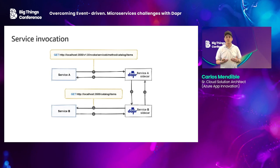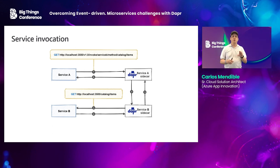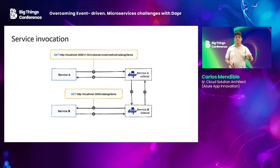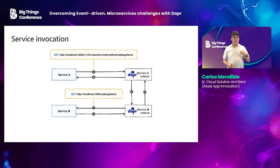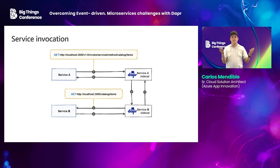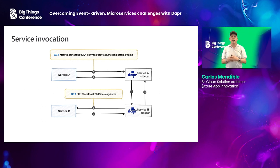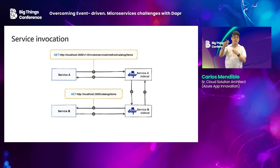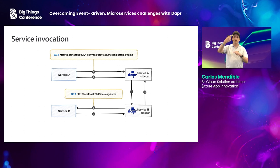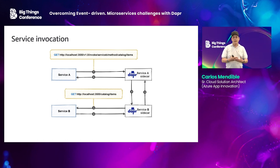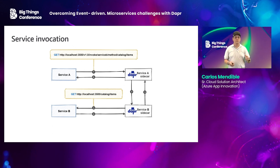Service invocation addresses how service A calls service B — it's not a direct connection, all calls go through the Dapr sidecars. If I want to go from service A to service B, I call my sidecar at localhost, use the invoke API, specify which service I want to invoke by its registered name, and which method — in this case catalog items. Dapr finds the other sidecar, talks securely between them using mTLS, and the second sidecar makes the actual call to your service inside its pod.